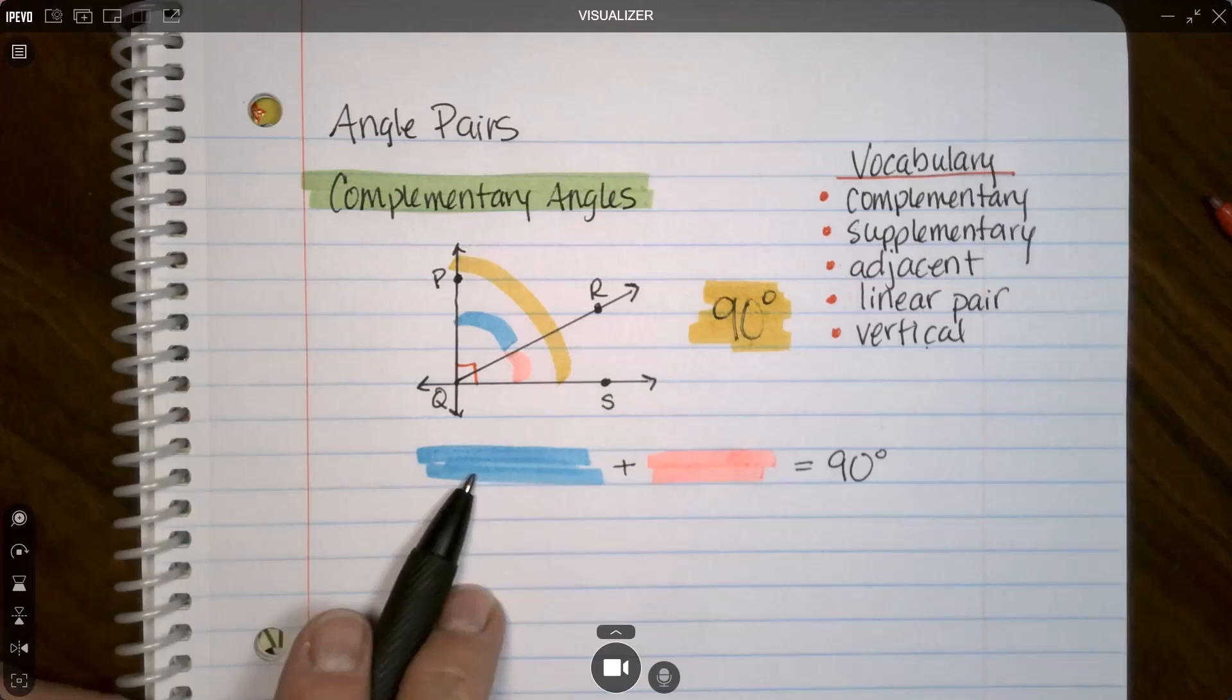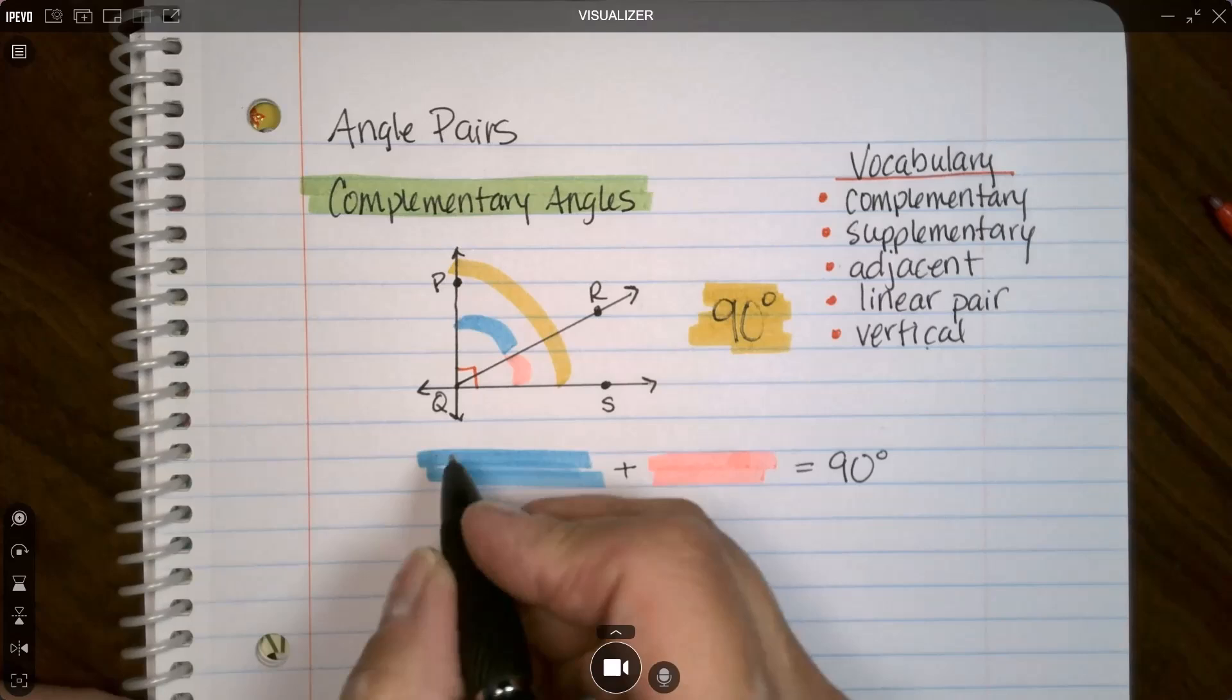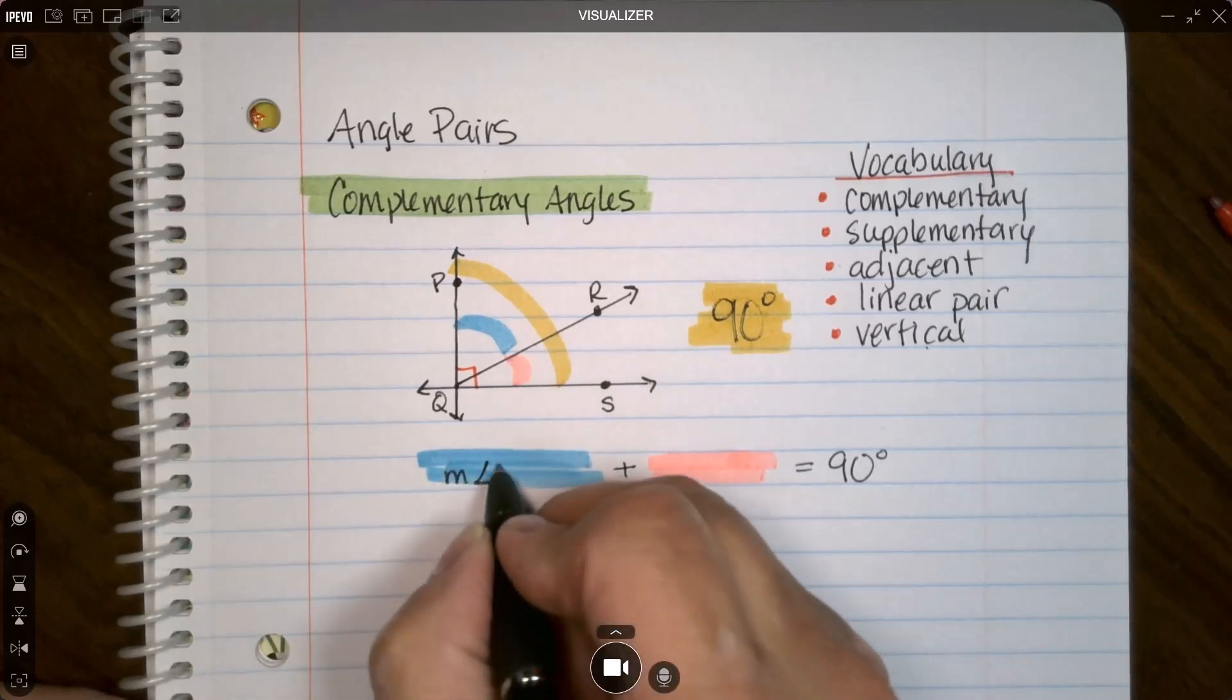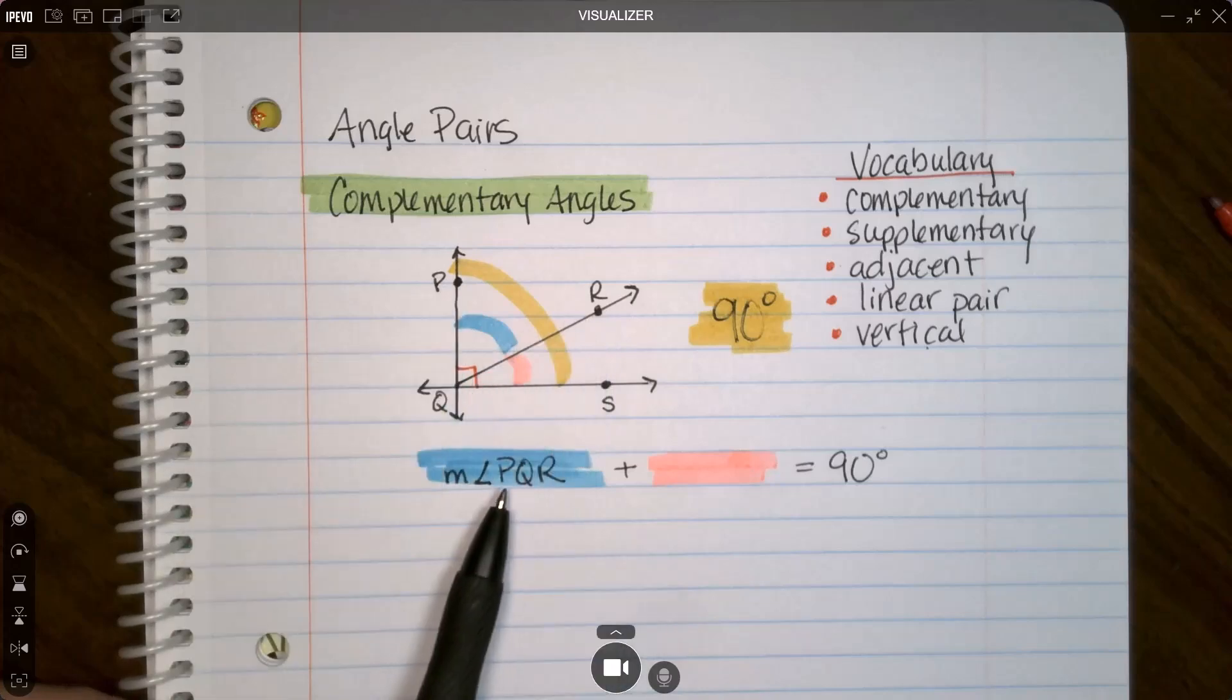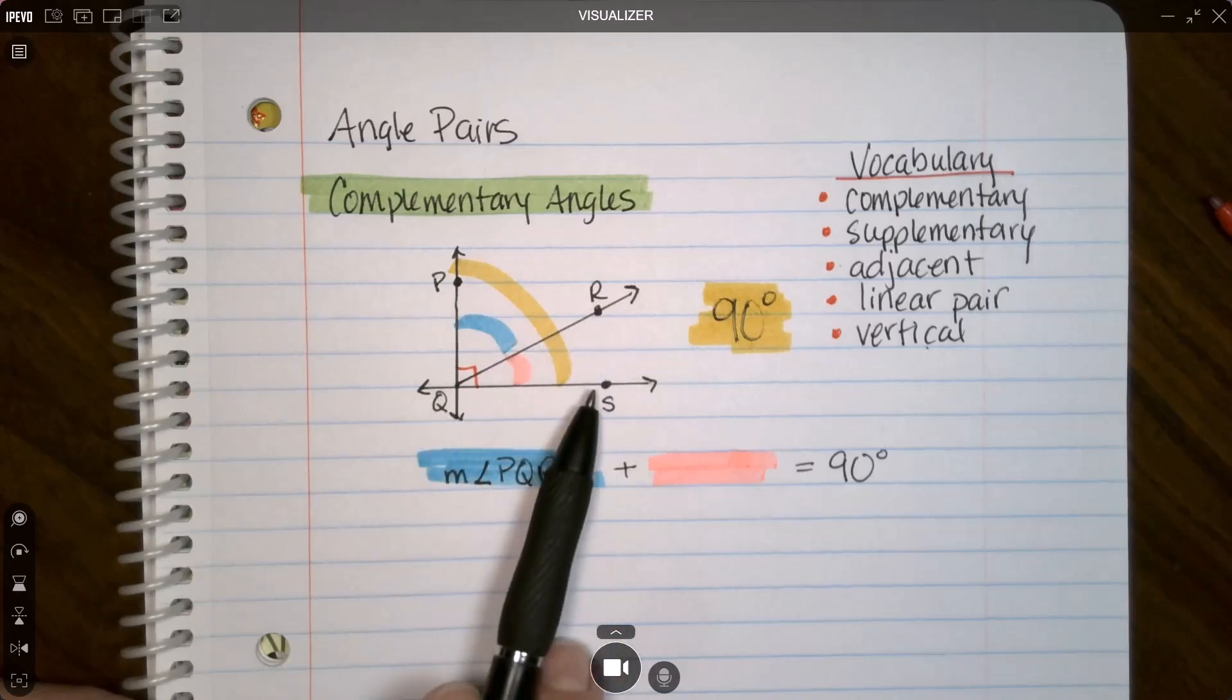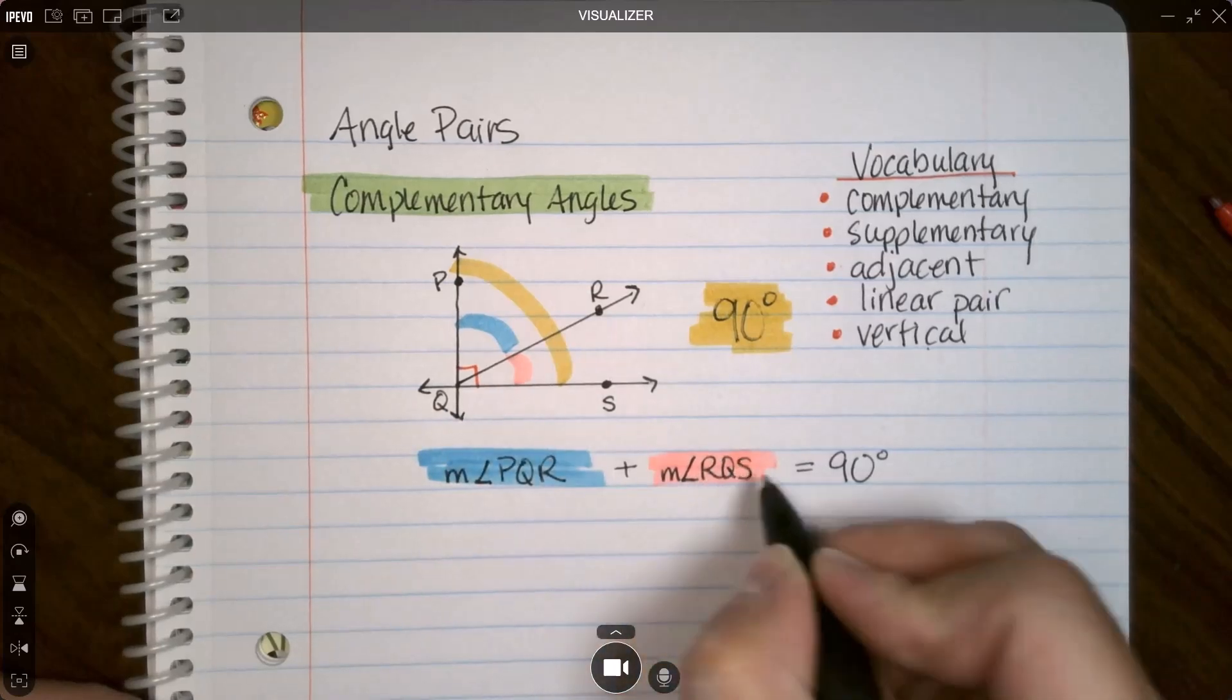Now let's put some notation in here. The blue angle is PQR. Q is the vertex of that angle right here, so you have to put that in the middle. The notation for measurement is to put a small case m, put an angle symbol, PQR. The pink angle, you can go RQS or SQR. So measure of angle PQR plus the measure of angle RQS equals 90 degrees.